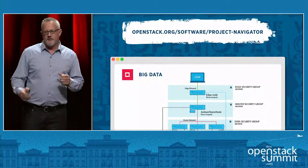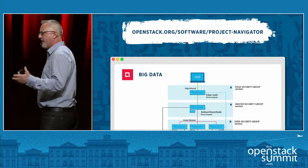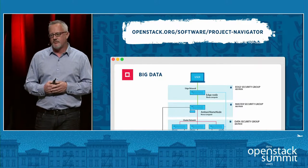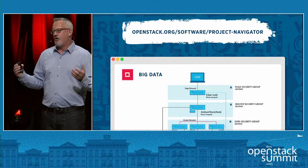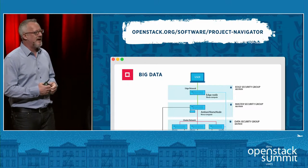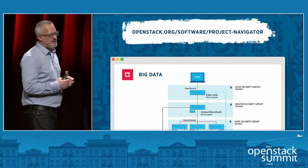Before we get to our next use case, I just want to mention one quick thing about how we're helping each other in the OpenStack community. In the particular case of big data, one of the things we've just launched this week is an update to the OpenStack Project Navigator. You can find it at OpenStack.org. This is a place on the website where you can learn a lot about different projects, and what we've really added just this week are some reference architectures. One of the first ones we have online is for big data.